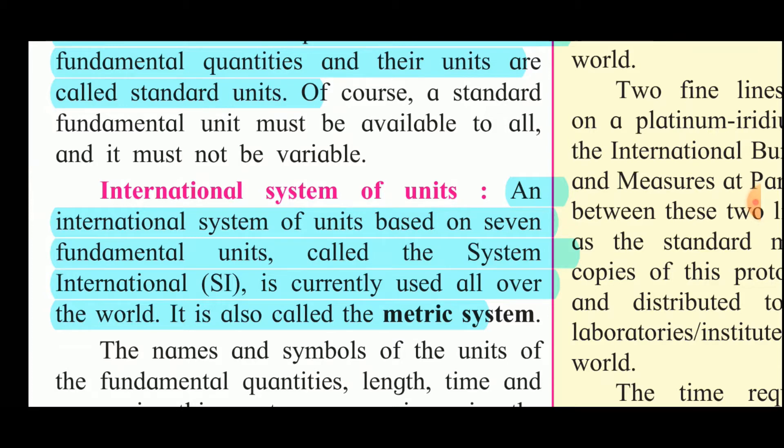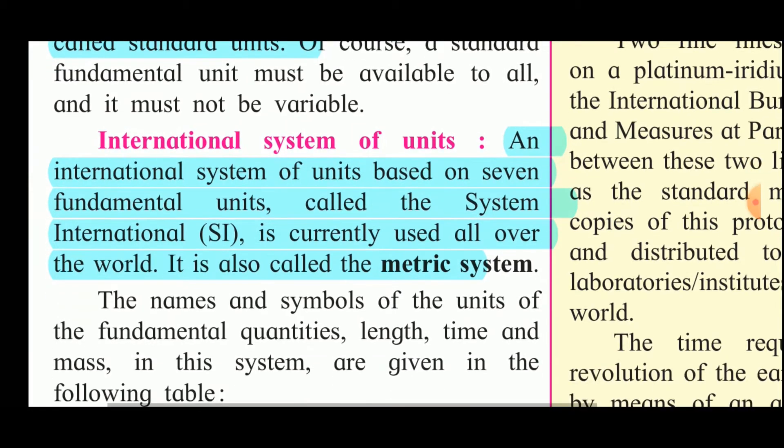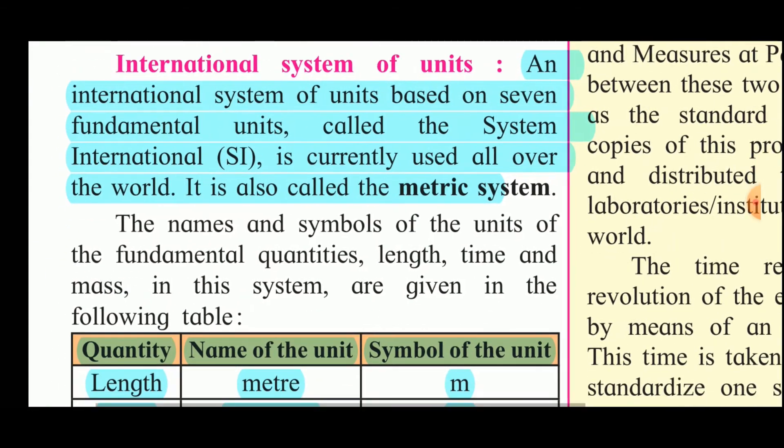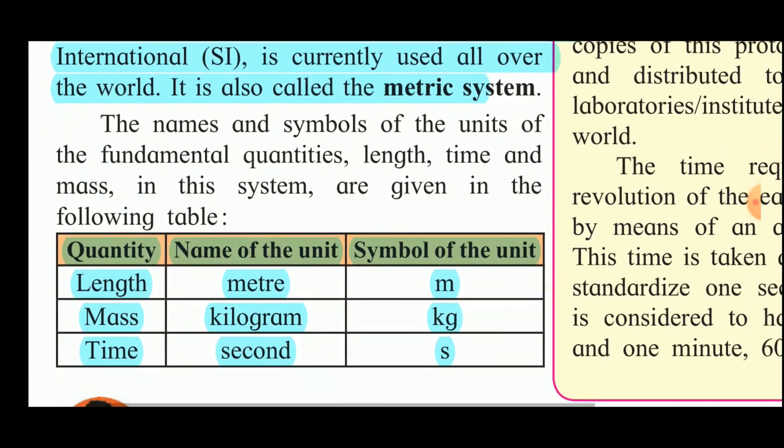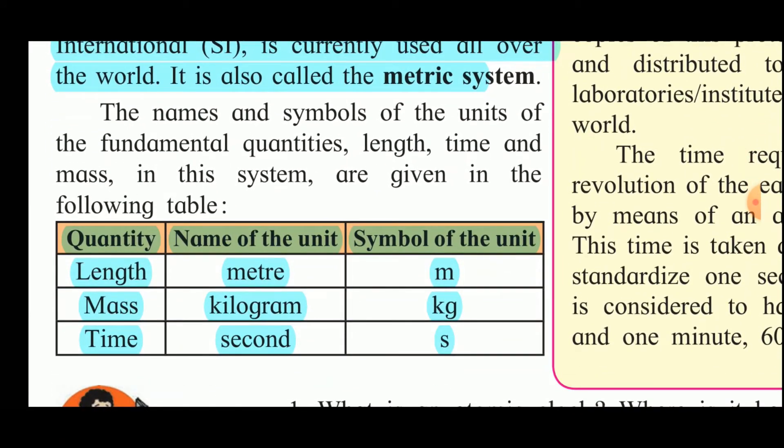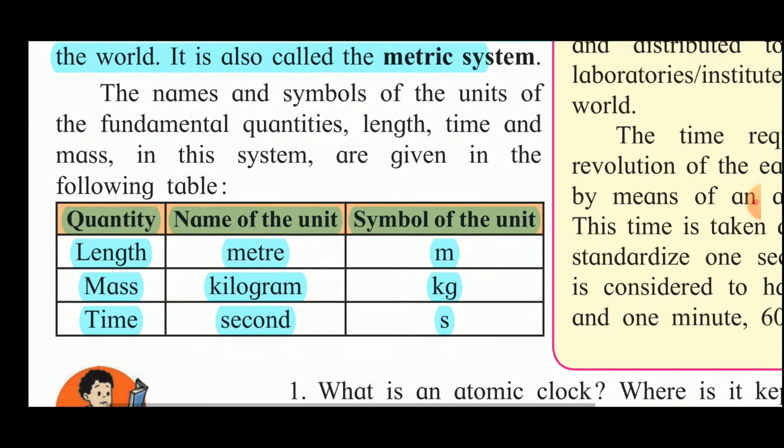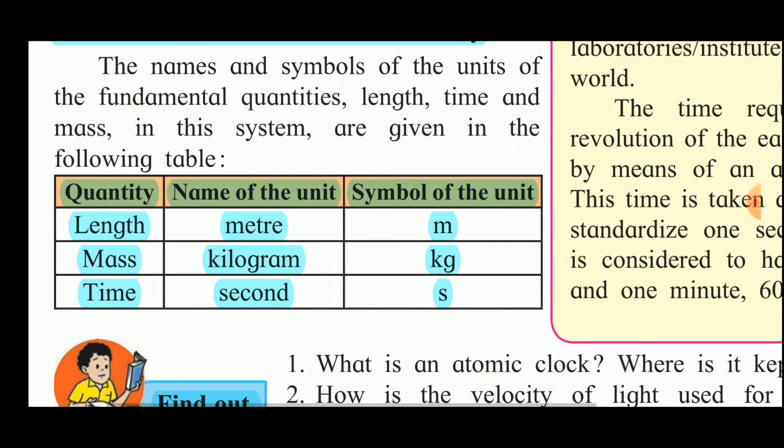The names and symbols of the units of the fundamental quantities: length, time and mass in this system are given in the following table. Length, name of the unit is meter and symbol is small m. Mass is measured in kilogram, symbol is kg. Time in second and symbol is s. Total 7 fundamental quantities are there. But at this stage in 7th standard, we have to learn about the 3 fundamental quantities: length, mass and time.